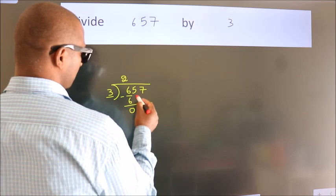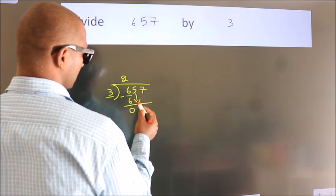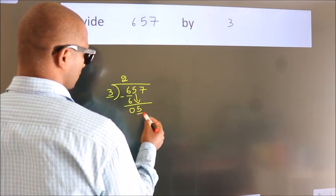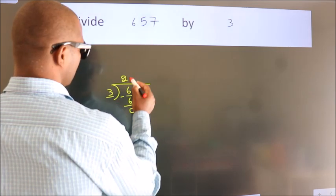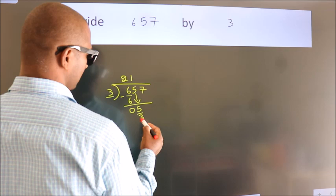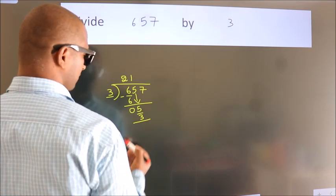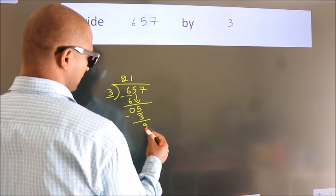After this, bring down the beside number, so 5 down, so 5. A number close to 5. In the 3 table is 3 times 1, 3. Now we subtract, we get 2.